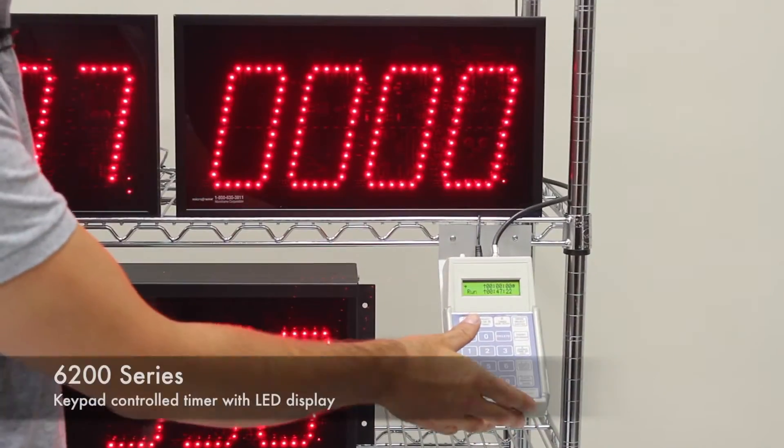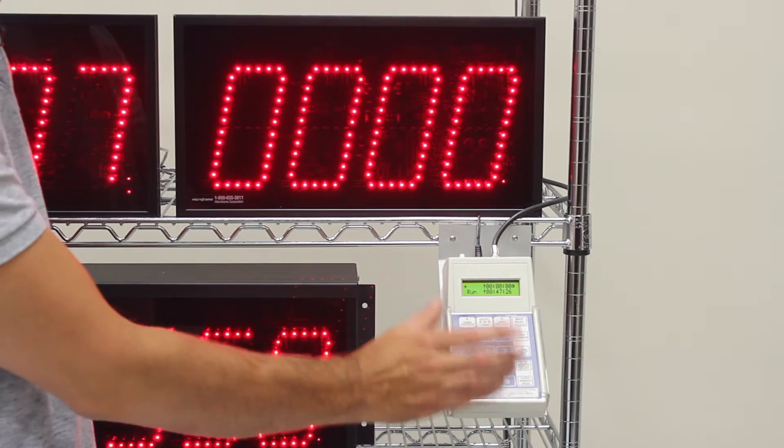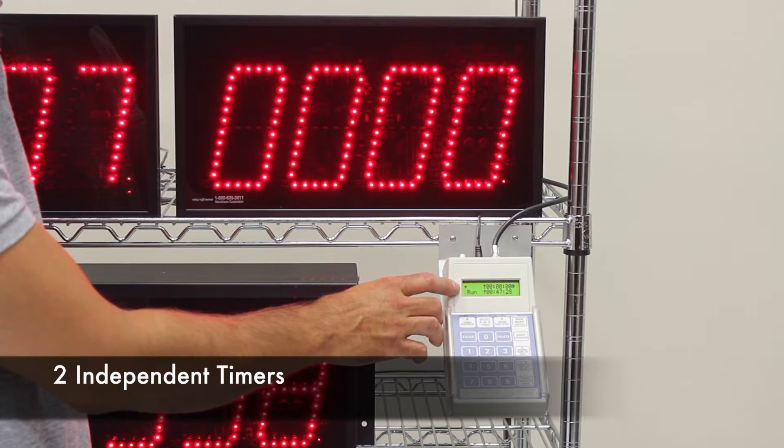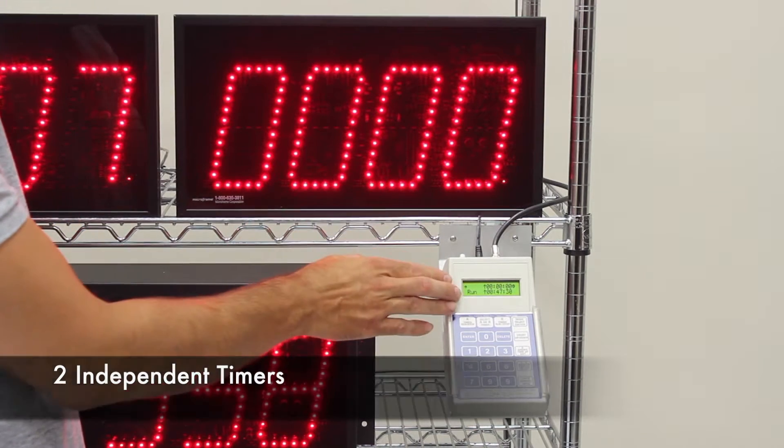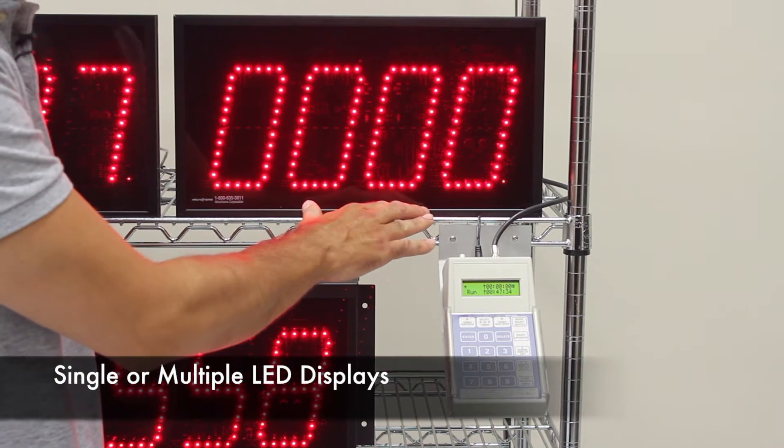The 6200 series is a keypad controlled timer system. The keypad has two independent timers, and the remote display can show one of the timers at a time. You can have a single display or multiple displays.